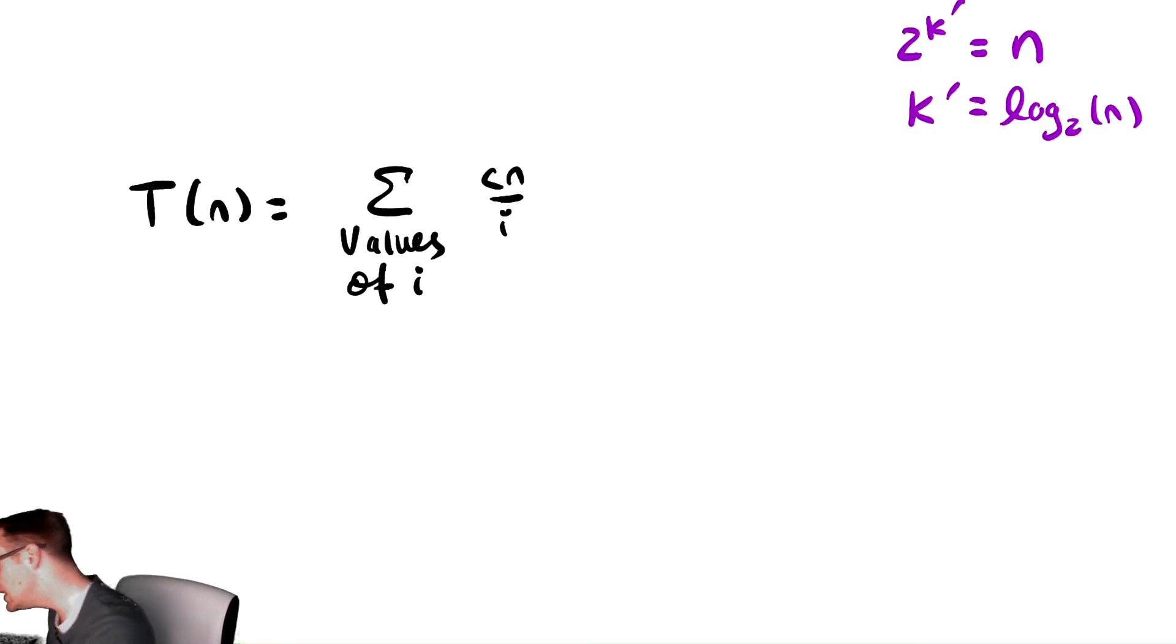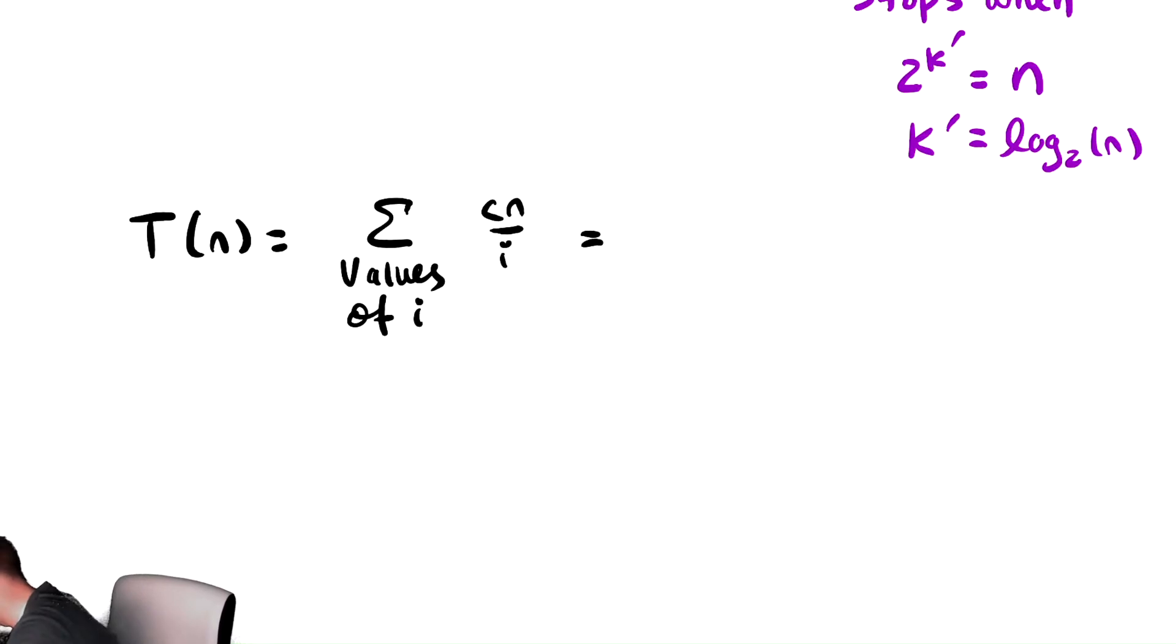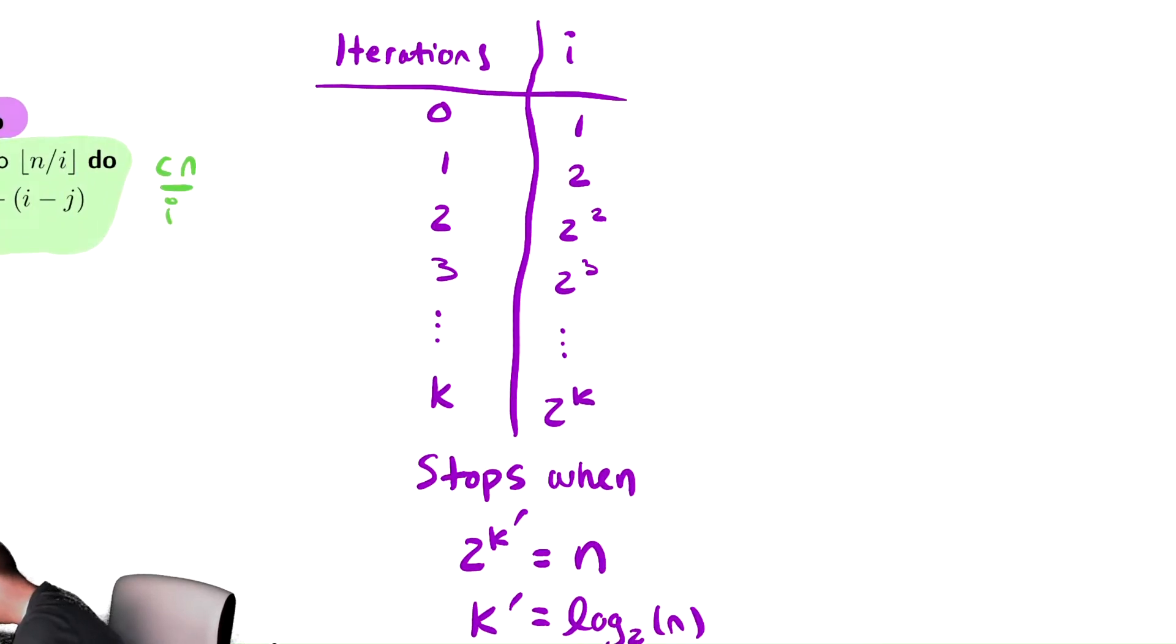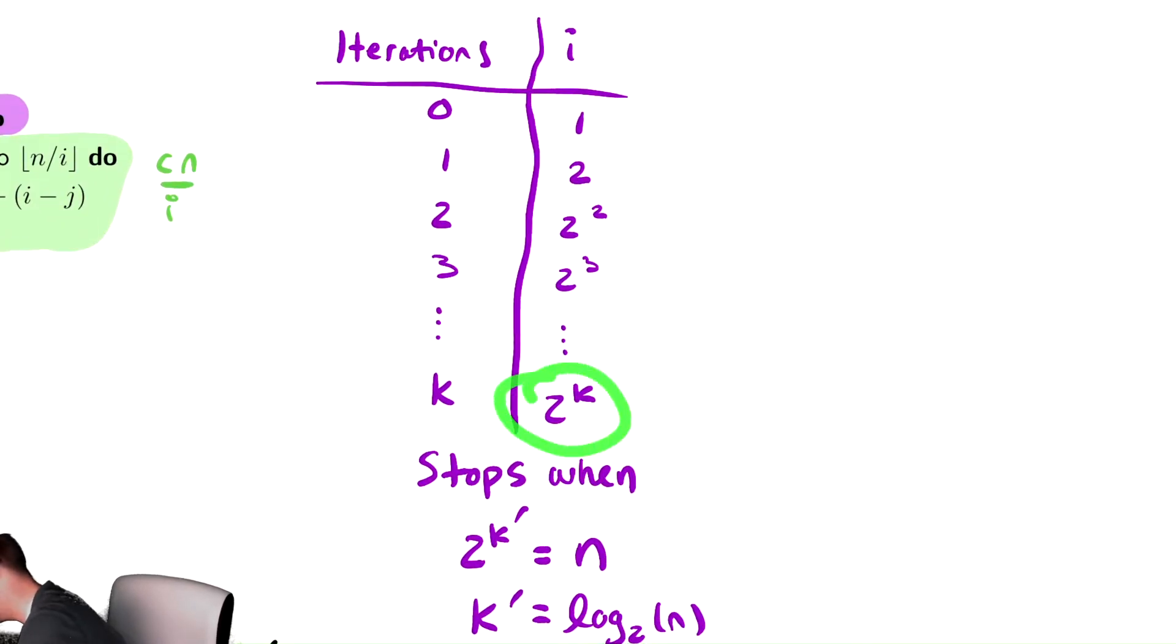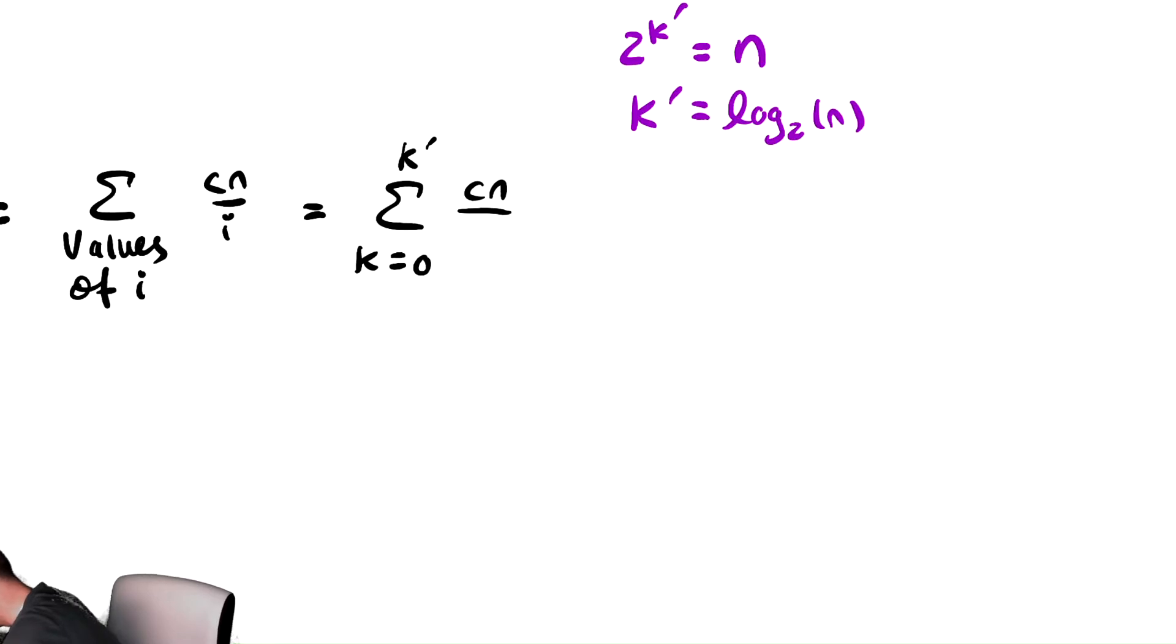And now we recontextualize the summation as one over k, so we add up over k instead, k going from zero to k prime of cn divided by i. In terms of k, i is two to the k, so we replace i with two to the k. And just as we've done in the past, maybe instead of just writing k prime we write the actual thing that it is equal to, which is log base two of n.